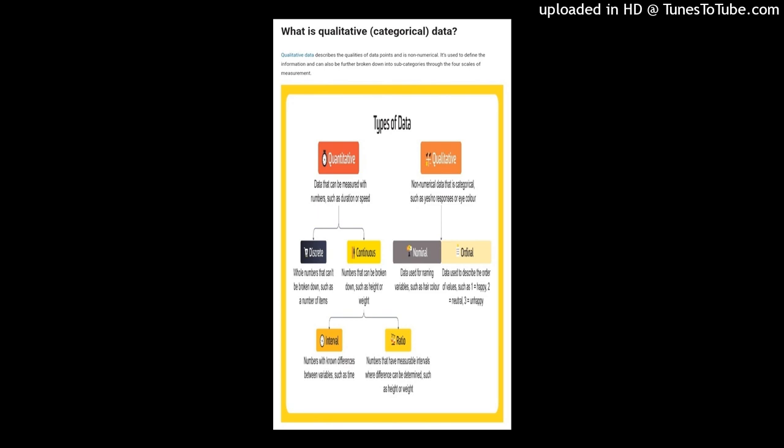Other examples of interval scales include the year a car was made or the month of the year. Ratio scales of measurement include properties from all four scales: the data is nominal and defined by identity, can be classified in order, contains intervals, and can be broken down into exact values. Weight, height, and distance are all examples of ratio variables. Data in the ratio scale can be added, subtracted, divided, and multiplied.